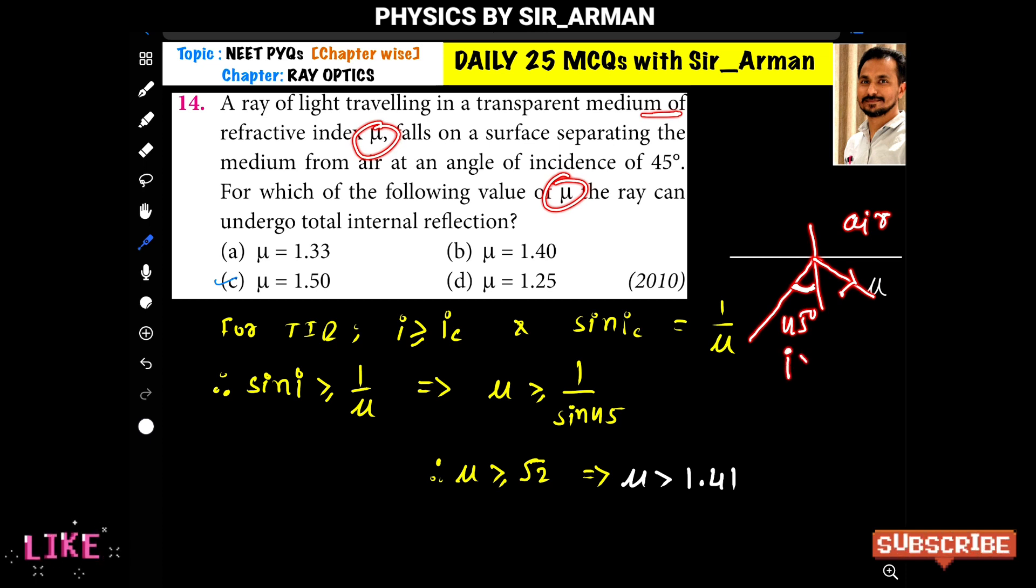the angle of incidence should be greater than or equal to the critical angle. That is, angle i should be greater than or equal to critical angle ic. And the condition for total internal reflection is sin ic equals 1 upon μ.